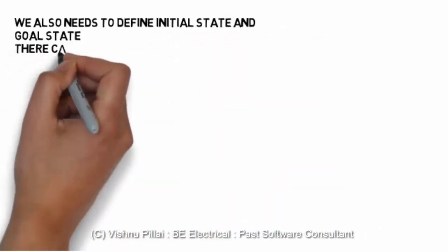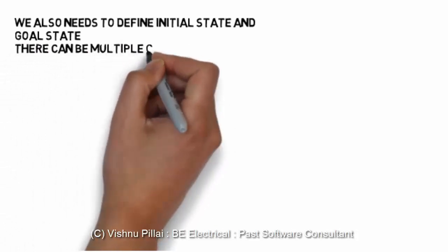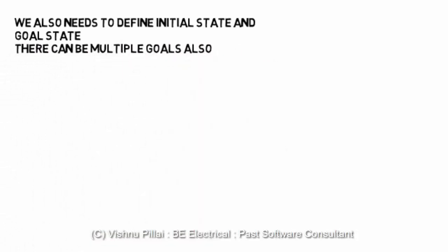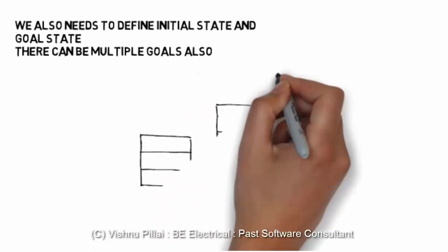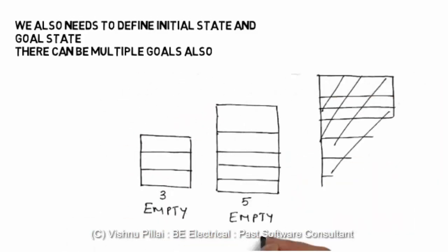We also need to define the initial state and the goal state. A system will use, or an artificially intelligent agent will use sensors to perceive what state the system is currently in.